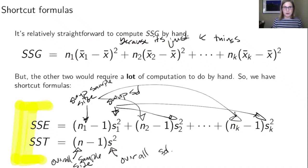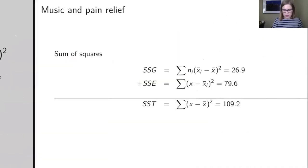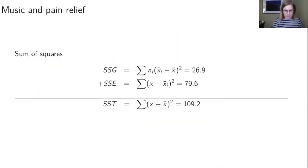So we ended the last video with a couple shortcut formulas. The other thing that's important to remember when you need to compute some of these sums of squares is that they all add up to one another. So if you have your SSG and you add your SSE, that'll turn out to be your SST.